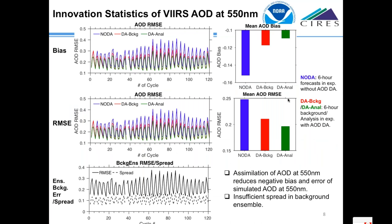Innovation statistics show bias and RMSE against assimilated VIIRS AOD for the no-DA 6-hour forecast, the DA background, and the DA analysis. After assimilating AOD, it reduces negative bias and error of simulated AOD. The bottom figure shows error and spread of the ensemble background. For a robust ensemble system, we expect good consistency between error and spread, but our current system suffers from severe spread deficiency. One of our current and future efforts is to find efficient means to increase the spread.